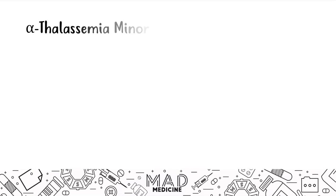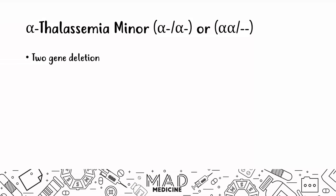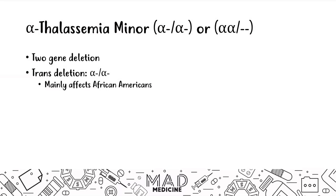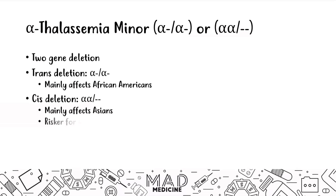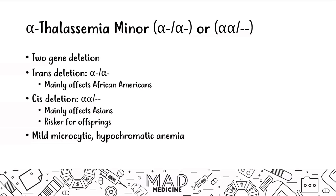Alpha thalassemia minor involves two gene deletions. You can either have a trans deletion, where the deletions are on opposite chromosomes — this mainly affects African Americans — or a cis deletion, where both deletions are on the same chromosome, which mainly affects Asians. There is a higher risk for offspring when cis deletions are present. These patients present with mild microcytic hypochromic anemia but are still able to function normally in their day-to-day lives.